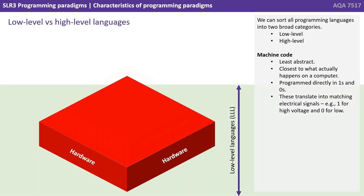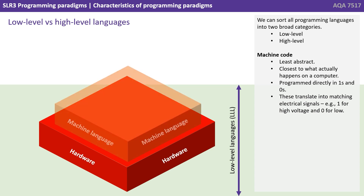We can sort all programming languages into two very broad and rough categories: low level and high level. At the very bottom, we have what we think of as machine code. This is the least abstract — it's closest to what actually happens on a computer.